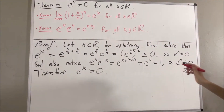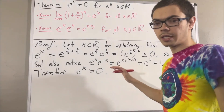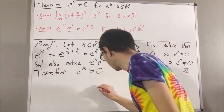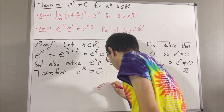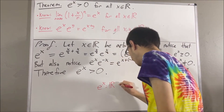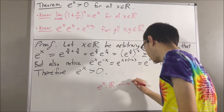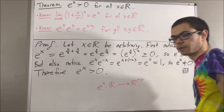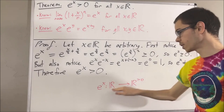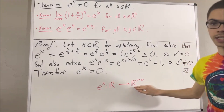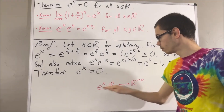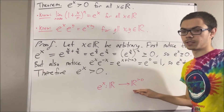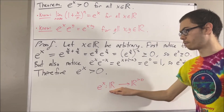What this tells us is that if we consider the exponential function over the domain of real numbers, every real number gets mapped to a positive real number, because for every real number x, e to the x is greater than 0. So we know this about the exponential function over the domain of real numbers.